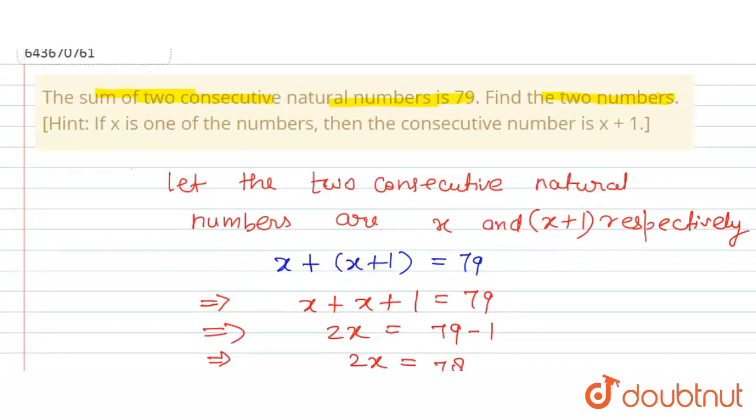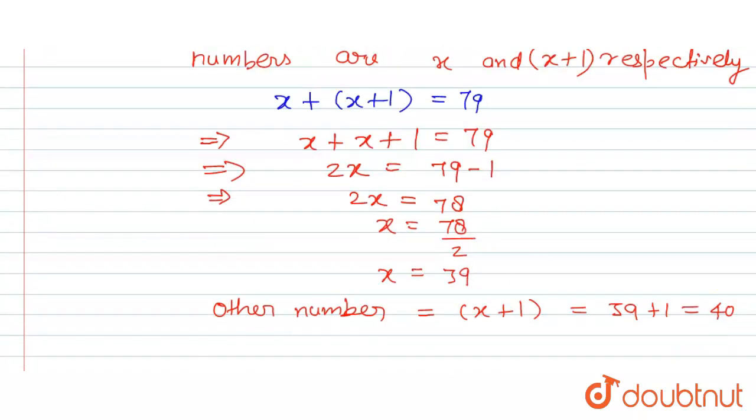The question is asking find the two numbers. So finally we can say that hence, the two numbers are 39 and 40. So this is the answer for this question. Thank you.